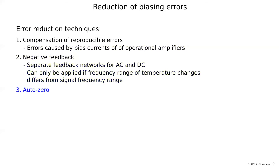Another technique often used is AutoZero. There are a few types. One type is: if you have a signal that is not of interest during some period, you can reset your amplifier during that period, compensate for biasing errors, and if the change over the time the signal is of interest is very small, that works well.